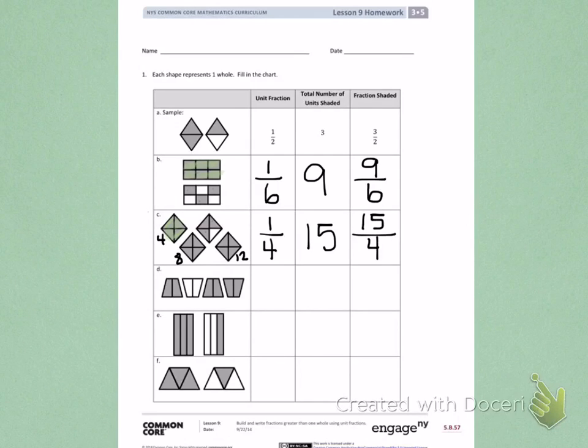Letter D. Each of my pictures is divided into two equal parts, which means my unit form will be 1 half.